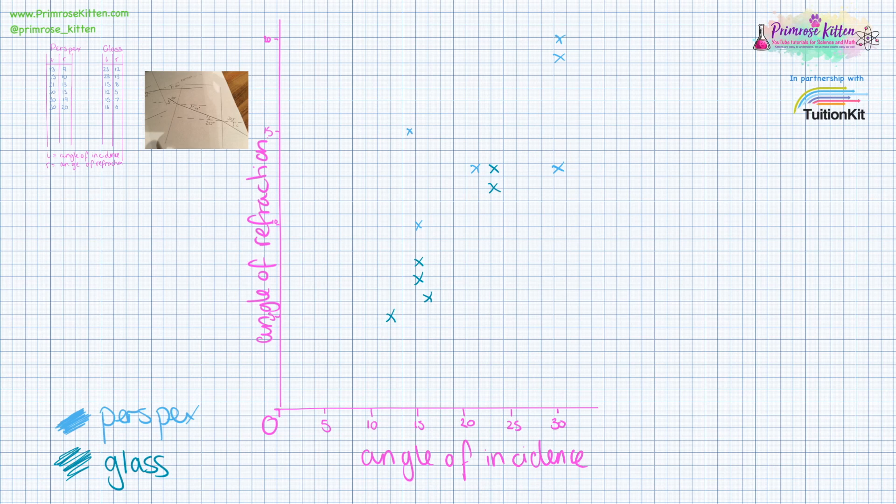Now, for glass, this is quite nice. We've got them all clustered around a central area, so I can draw my line a bit like that. Whereas perspex, there does seem to be a couple of odd results. So I'm going to circle those. Those are my outlier results, and I'm going to ignore them when I draw my line of best fit.